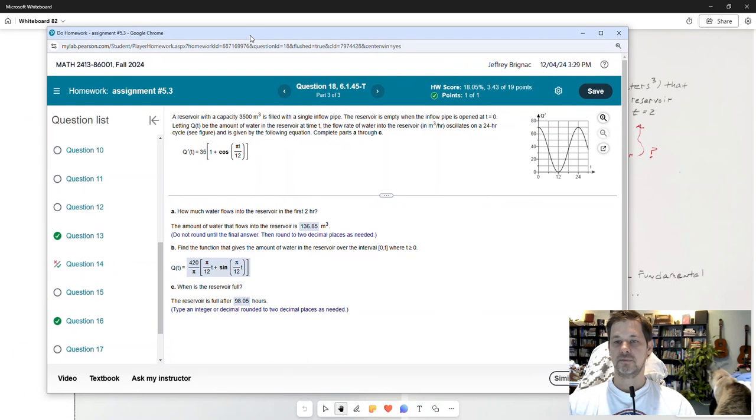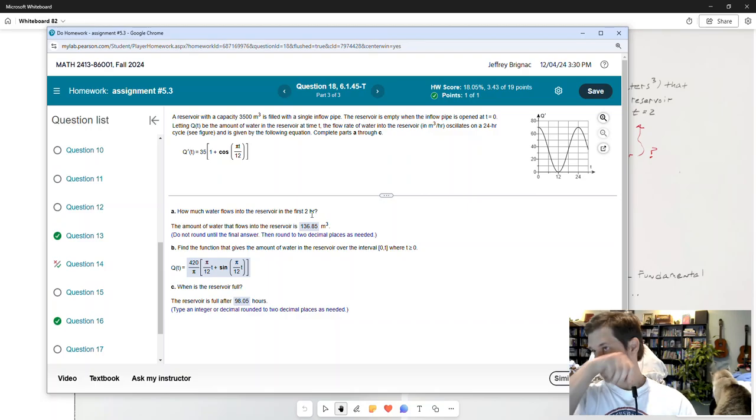Delta q over delta t, individually, those things are the change in q, where q is the amount of water in the reservoir measured in cubic meters, over the change in t, where t is the time measured in hours. So that's why q'(t) has units of cubic meters per hour. That's the preliminary information. Now, the first question is, how much water flows into the reservoir over the first two hours?